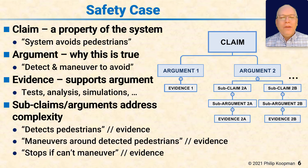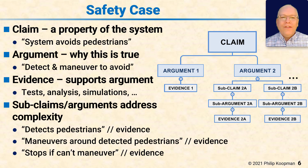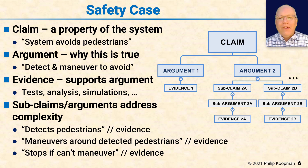A single claim with a bunch of flat arguments probably isn't going to work out. So to manage complexity and break down the task of assuring safety, there are typically subclaims. For example, an argument that has to do with avoiding pedestrians might be: we avoid pedestrians by detecting them, then we maneuver around the detected pedestrians, and then we stop if we can't maneuver.